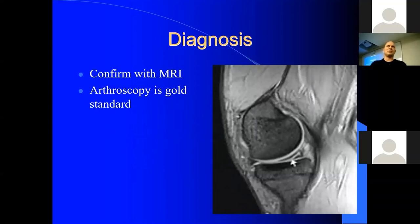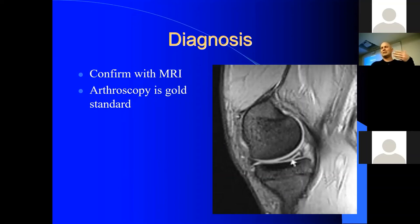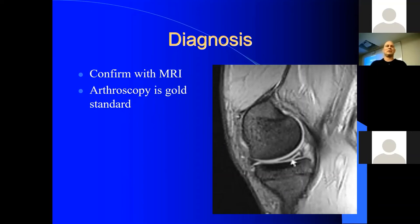On MRI a meniscal tear appears as a white line in the middle of the dark triangle of the meniscus. You want to see it on two consecutive cuts to confirm it's truly a tear, since degenerative signal in older patients can look similar. Bone bruising and arthritis can mimic meniscal tears, especially in older patients, making the exam-based diagnosis tougher. If the MRI is questionable or the radiologist doesn't give a definitive read, you can refer to the surgeon for discussion about a diagnostic arthroscopy.